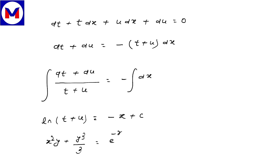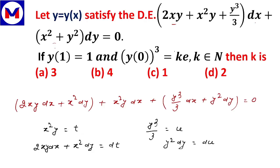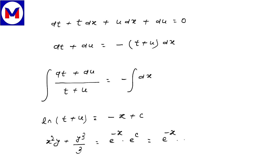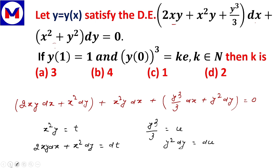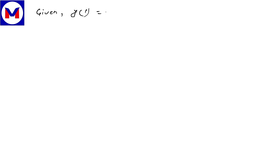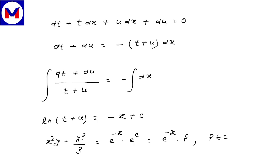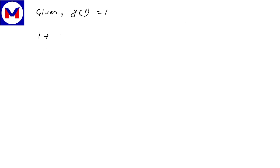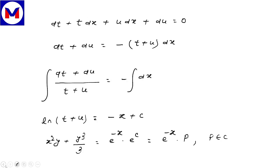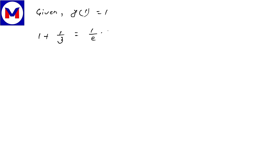So x²y + y³/3 = p·e^(−x), where p is an arbitrary constant. Applying the initial condition y(1) = 1: we get 1 + 1/3 = p·e^(−1), that is 4/3 = p/e, so p = 4e/3.